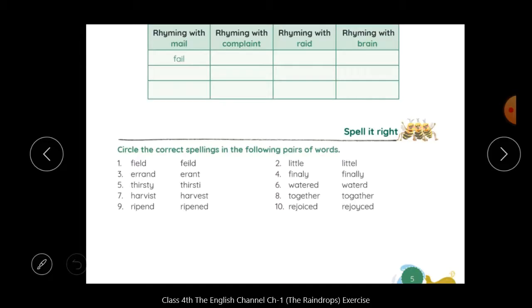Next watered and watered. Which word is correct? Watered. Watered means plants ko paani dena. Next harvest. Which one is correct? This one, harvest. Next together. What is the spelling of together? Yes, this one. Next, ripened. This one is right. And next last one, rejoiced. What is the spelling of rejoiced? R-E-J-O-I-C-E-D. Rejoiced.